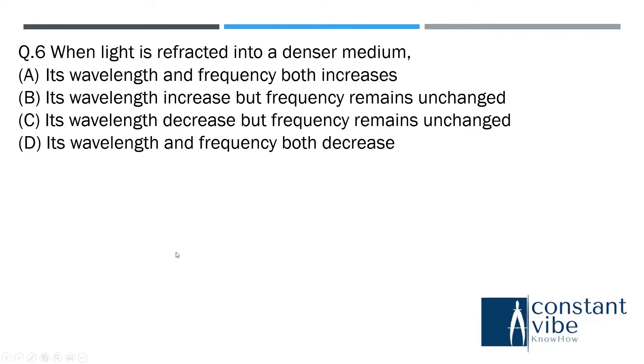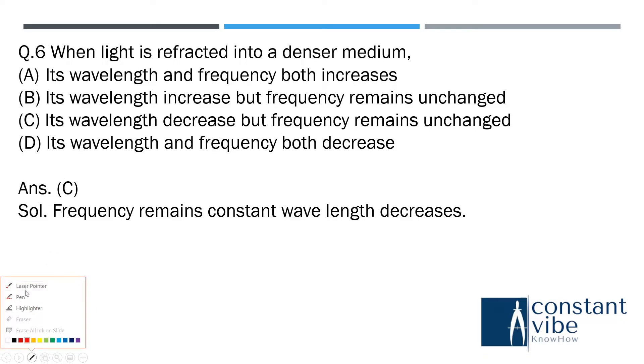Next question is: when the light is diffracted into a denser medium, then answer is 3. Frequency remains constant and wavelength decreases. This is now the medium. If it is denser medium and it is rarer medium.